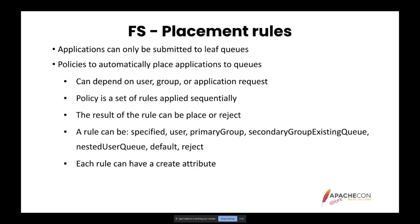An application can only be submitted to live queues. When there are multiple queues, policies can be configured that automatically place the submitted application into appropriate queues. These policies are called placement rules. A placement can depend on the user or group of the submitter and the requested queue passed by the application. A policy contains a set of rules applied sequentially to classify an incoming application. Each rule either places an app into a queue or rejects it. When no matching queue is present and automatic queue creation is not possible, then the next rule will be evaluated.